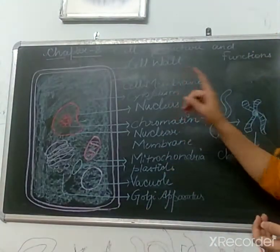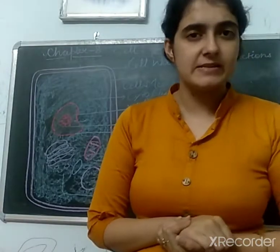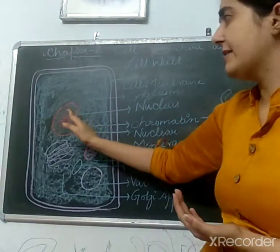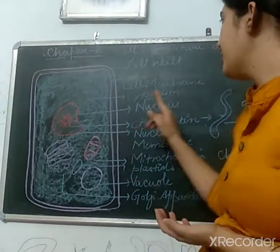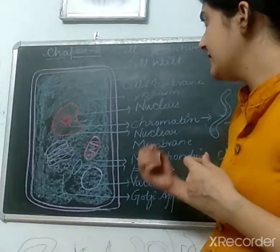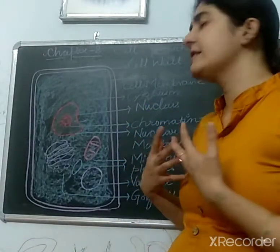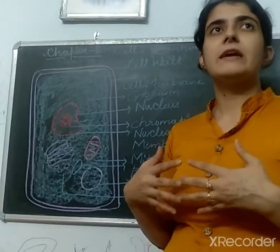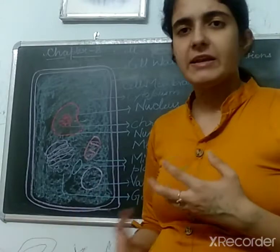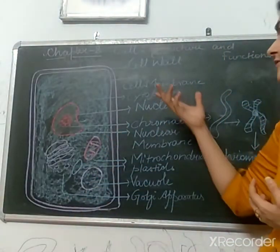The next one is cytoplasm. Cytoplasm is basically a jelly-like substance present inside the cell, between the cell membrane and the nucleus. The function of cytoplasm is to release or store energy, and all the metabolic activity of a cell occurs in the cytoplasm.